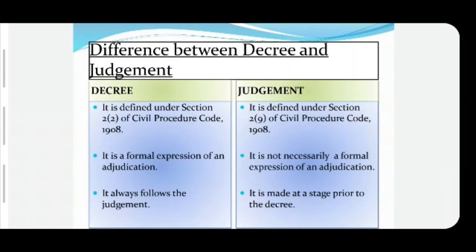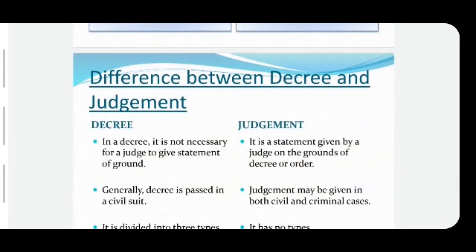A decree is a formal expression of an adjudication — it is formally expressed by the court of law or its officer. While a judgment is not necessarily a formal expression of an adjudication. Next difference: a decree always follows the judgment, while judgment is made at a stage prior to the decree — first the judgment is made, then the decree comes. In a decree, it is not necessary for a judge to give a statement of grounds, while in a judgment, a statement is given by the judge on the grounds for that decree or order. A judgment is the statement given by a judge stating the grounds for the decree and order, while in the case of a decree no such statement of grounds is necessary.